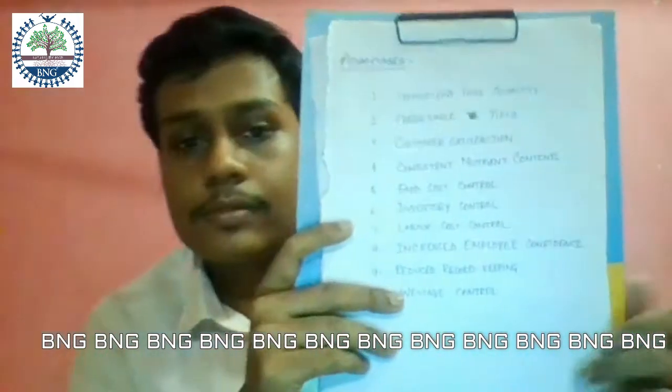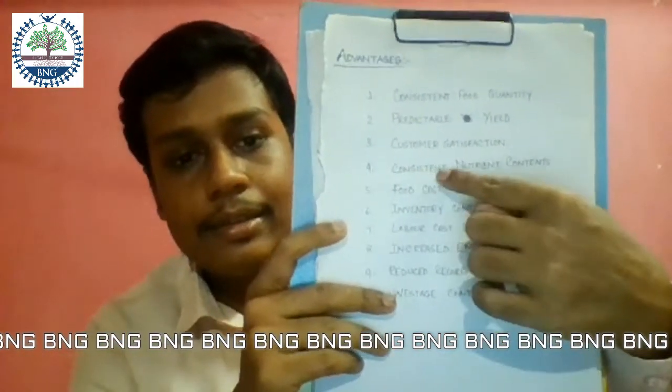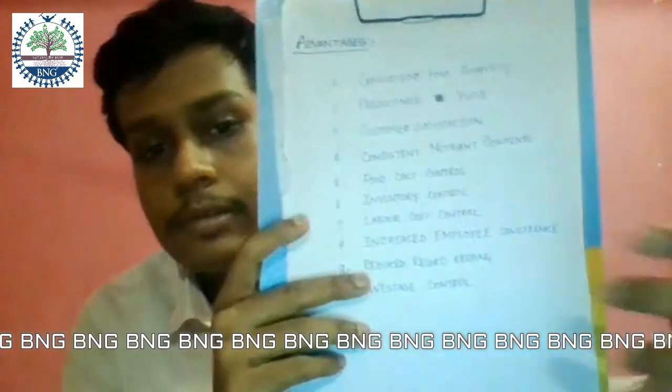Next is consistent nutrient content. When the ingredients are the same, the nutrient content is also the same, because nutrients come from the ingredients. Another advantage is food cost control — when you know the quantity and type of ingredients needed, and you know the number of customers or guests, you can easily manage your food cost.